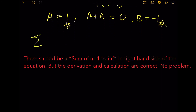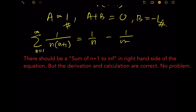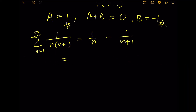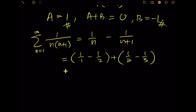This means the sum from n equals 1 to infinity of 1 over n(n plus 1) is simply 1 over n minus 1 over n plus 1. Putting in n equals 1: 1 over 1 minus 1 over 2. Putting in n equals 2: 1 over 2 minus 1 over 3. Putting in n equals 3: 1 over 3 minus 1 over 4, and so on.